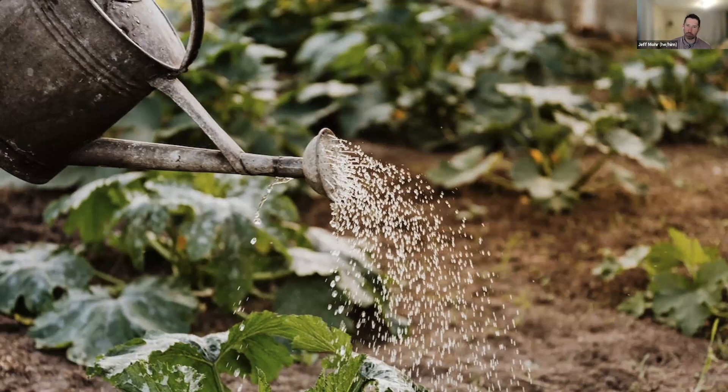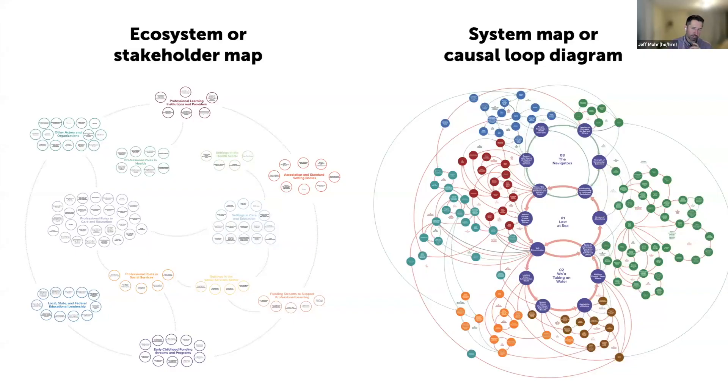When we think about how people are using Kumu, especially when people say I'm using Kumu to do systems map or systems change, we usually see people do one of two paths. This left path is what I'd call the ecosystem mapping or stakeholder mapping. This side is really thinking about the best way that I can understand my system is by better understanding the actors that are involved in that system and the relationships between them.